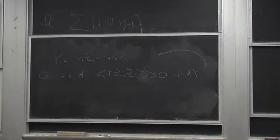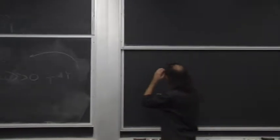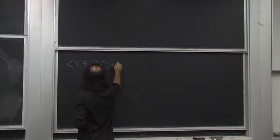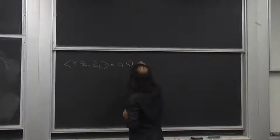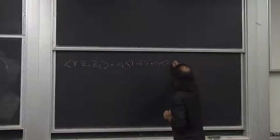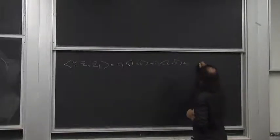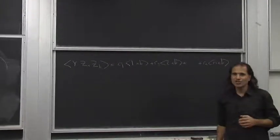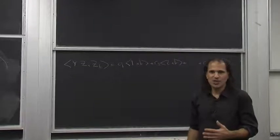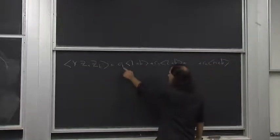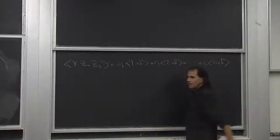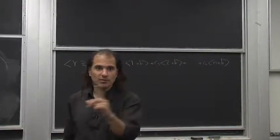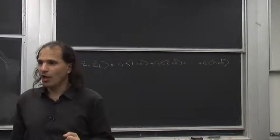Let's compute it. What is y(za, zb) for any old a and b? It equals c1·(1,a,b) plus c2·(2,a,b) plus dot dot dot plus cn·(n,a,b). This has a chance to be positive because the c's are all positive. And these minors — these determinant brackets — are also all positive if they're all ordered.